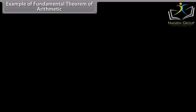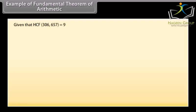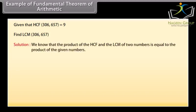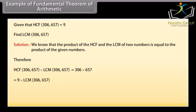Examples of fundamental theorem of arithmetic. Given that HCF(306, 657) equals 9, find LCM(306, 657). Solution: We know that the product of HCF and LCM of 2 numbers equals the product of the given numbers. Therefore HCF(306, 657) into LCM(306, 657) equals 306 into 657. 9 into LCM(306, 657) equals 306 into 657. LCM equals 306 into 657 upon 9, which equals 22,338.